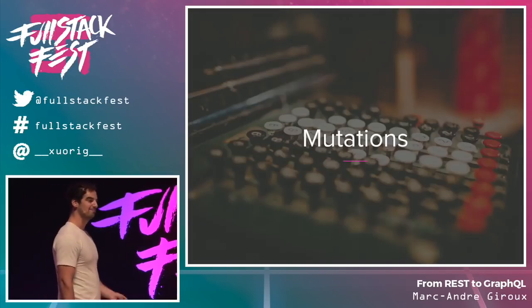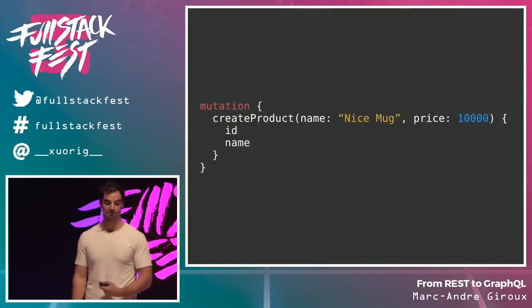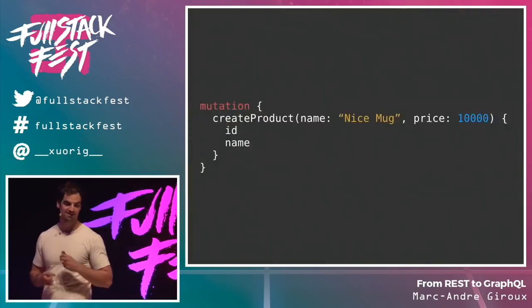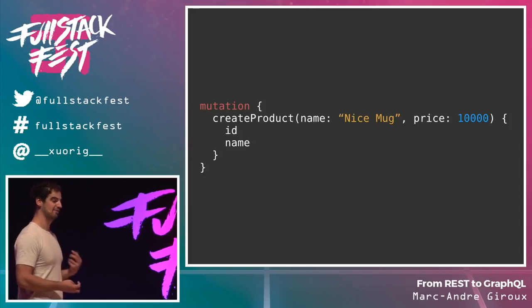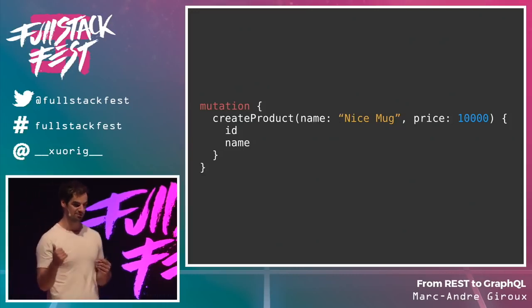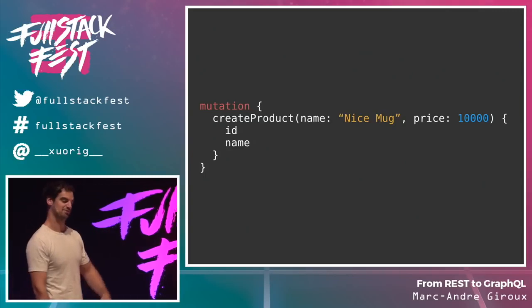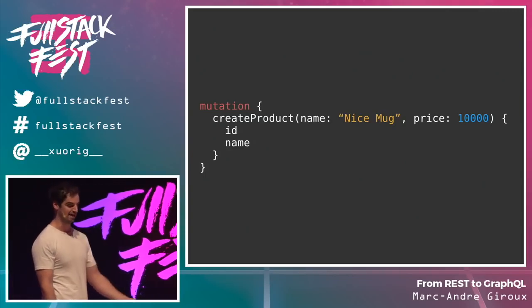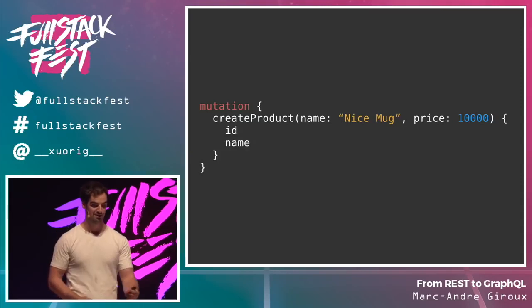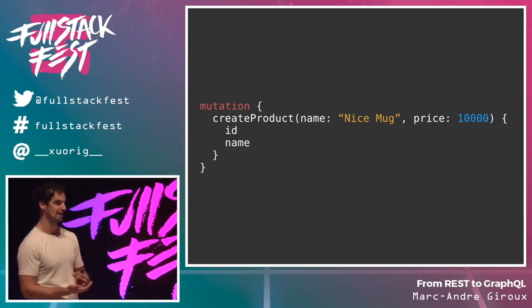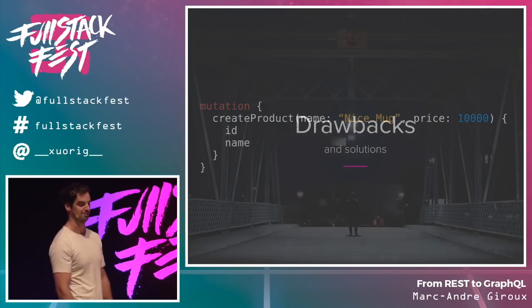We've only seen read-only so far, but we can write too. In GraphQL they're called mutations, and they look pretty much exactly like a normal field. The only difference is they're only on the root — we have a query root and a mutation root. They're top-level actions and they have side effects, but you can still select the return type and choose what you want from the response.